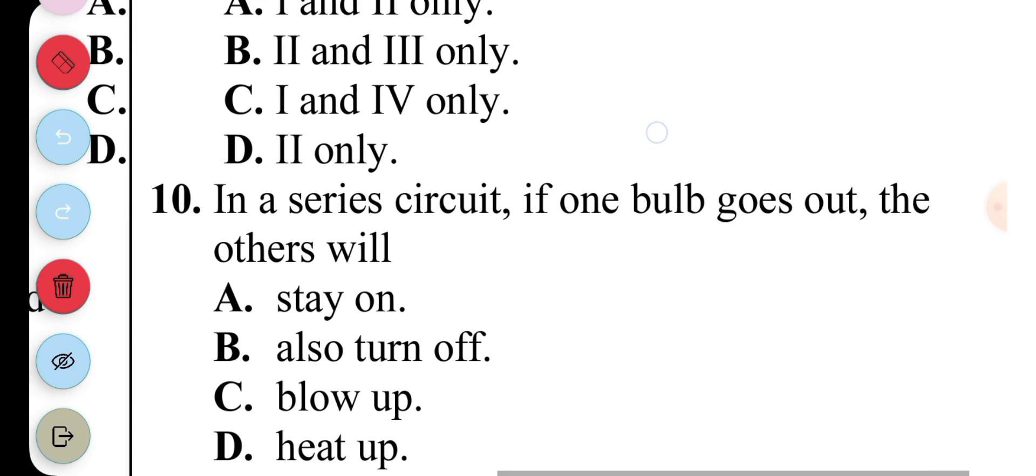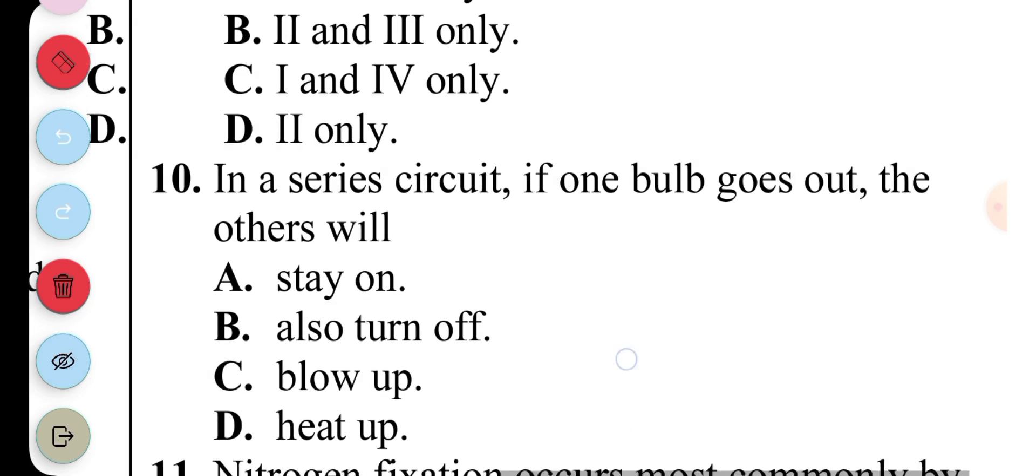Question 10: In a series circuit, if one bulb goes out, the others will A. Stay on, B. Also turn off, C. Blow up, D. Heat up. The answer to question 10 is B, Also turn off, because they are all on the same line. So once one bulb goes off, it means that they are also going to go off.